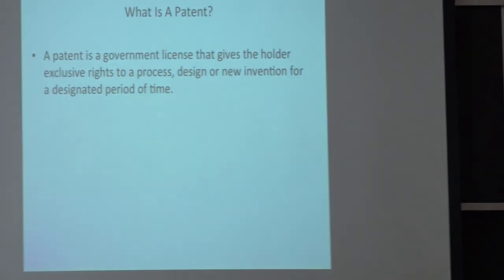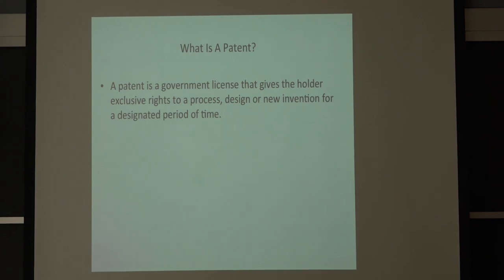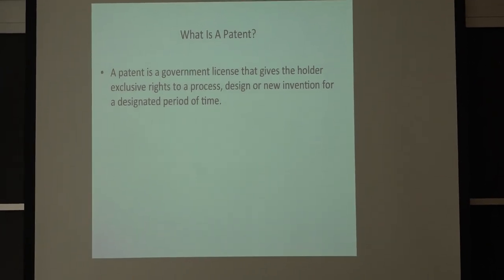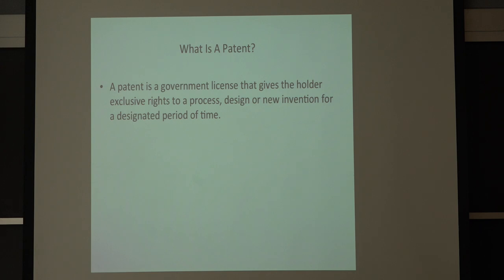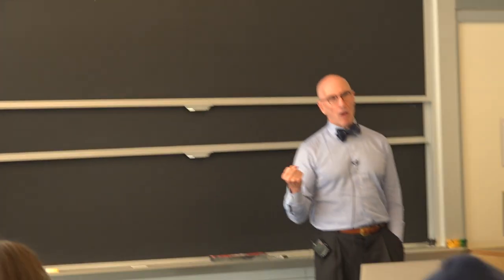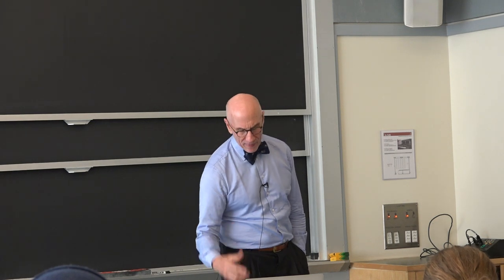We've already talked about what a patent is. It's a government license which gives the holder basically a monopoly or exclusive rights over a particular invention. You own it. And it's important to think about this stuff almost like a tangible thing. Ownership of intellectual property is the same as ownership of a tangible thing — it's the same as owning a chair, a house, a car. You're not really owning anything that is any less real than a house made of bricks or a car made of plastic and metal. Intellectual property rights really are tangible rights.